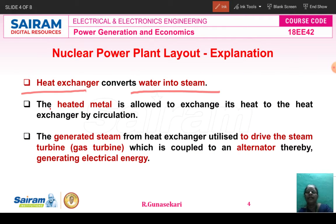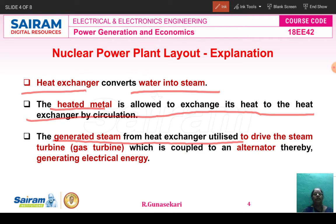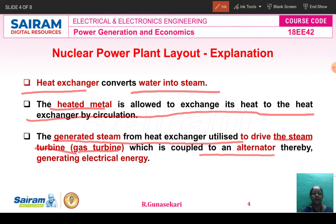The heated metal is used to allow its heat to be exchanged in the heat exchanger by circulation. The generated steam from the heat exchanger is utilized to drive the steam turbine, which is coupled to the alternator, and the alternator generates electrical energy.